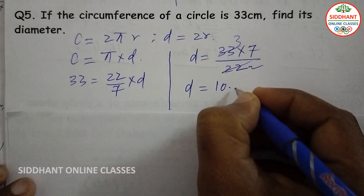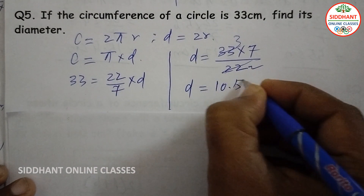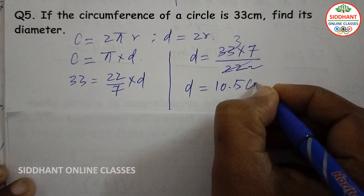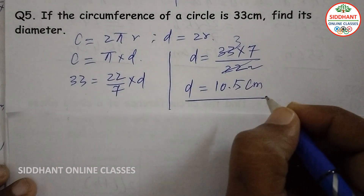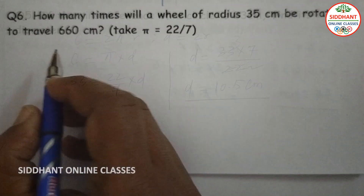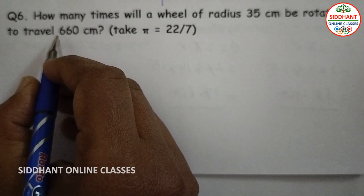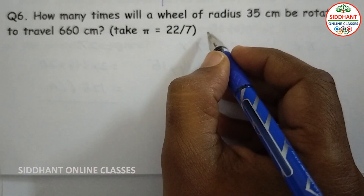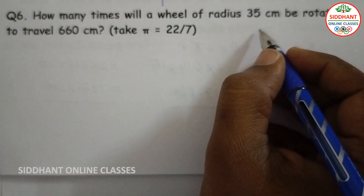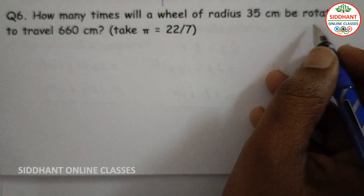So d equals 33 into 7 by 22. Here simplifying we get diameter equals 10.5 centimeters.